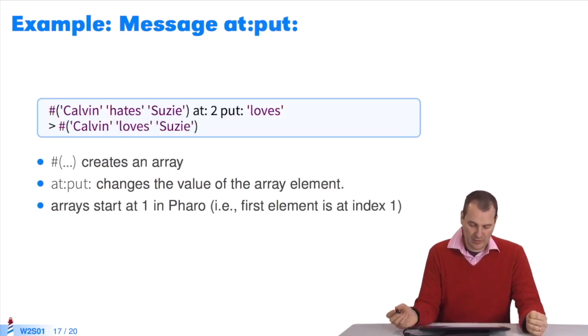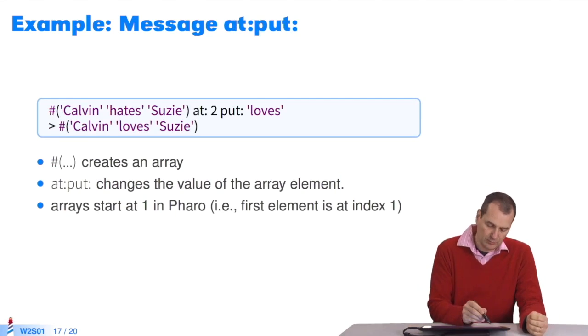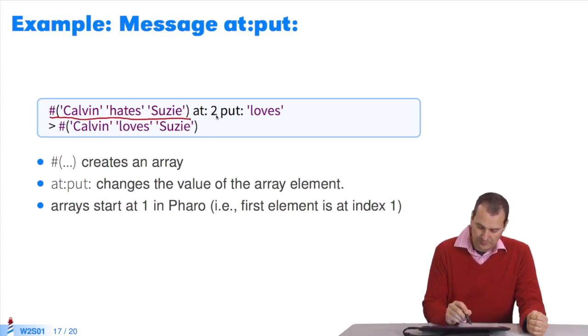Now with the message at put, I have an array. It contains strings: Calvin, hates, Susie. I want to change the second element. I write at to put loves. This is 2, so loves comes here.